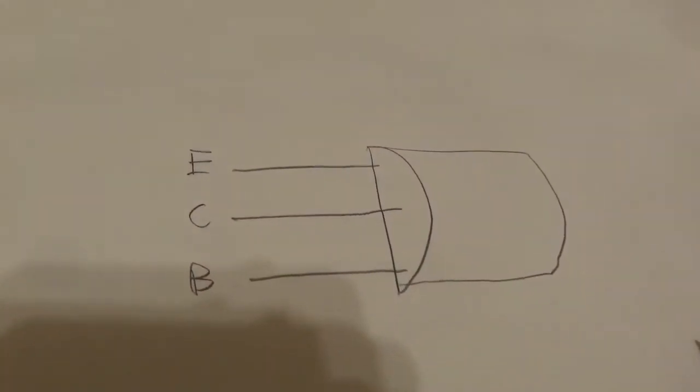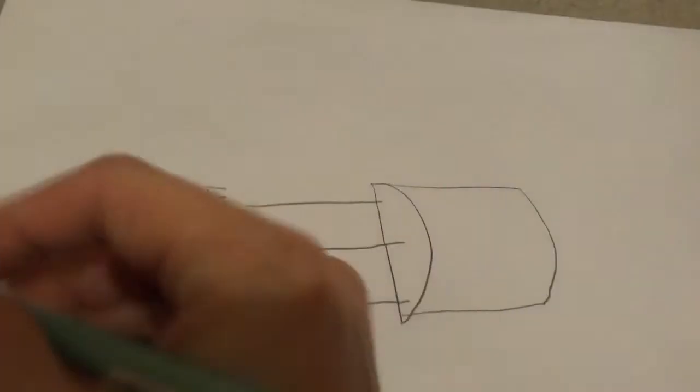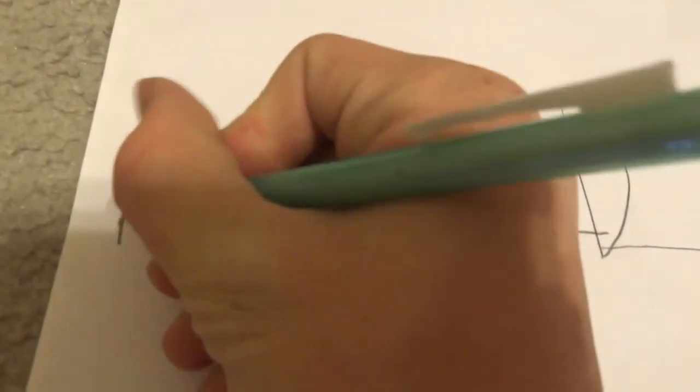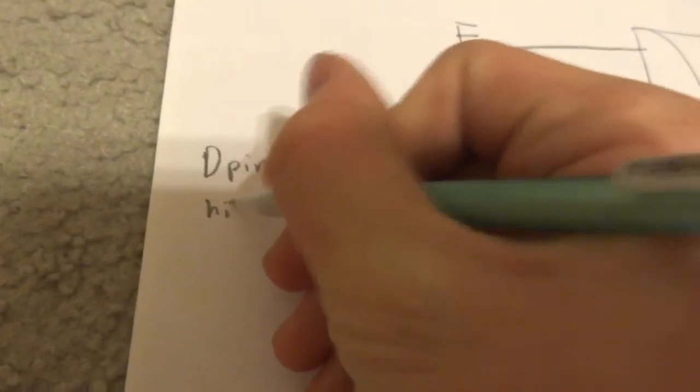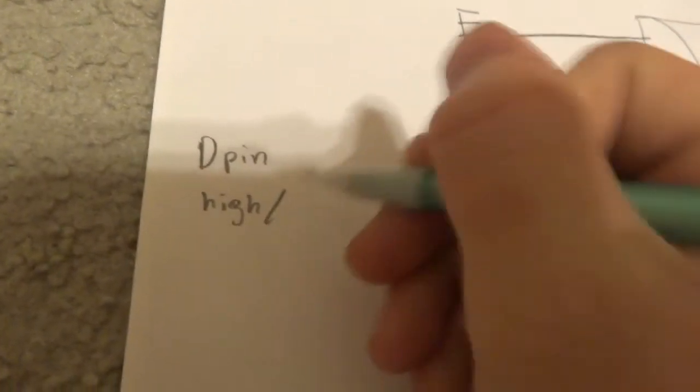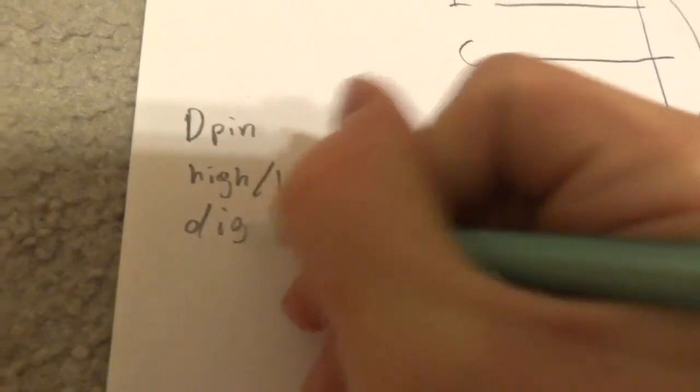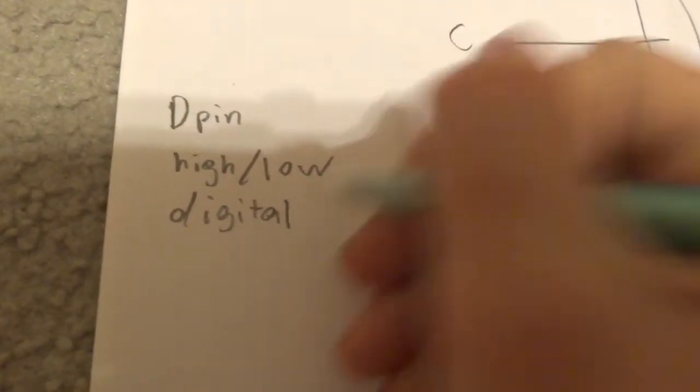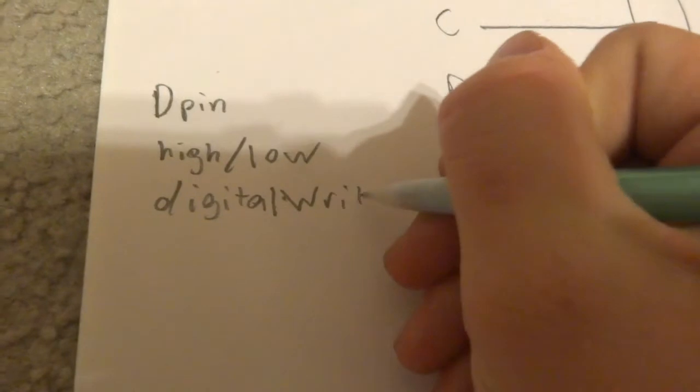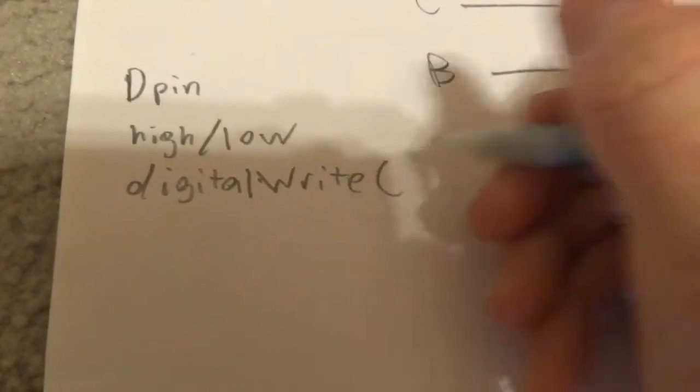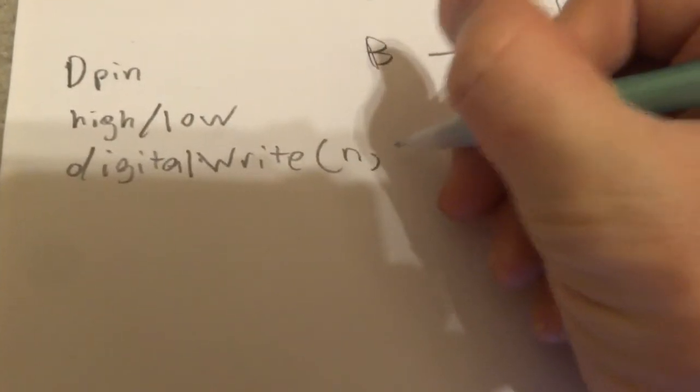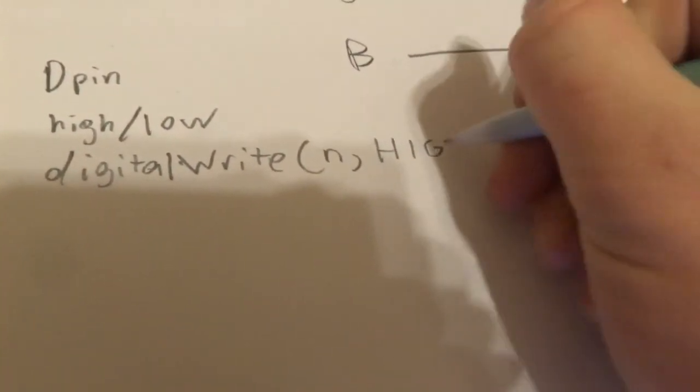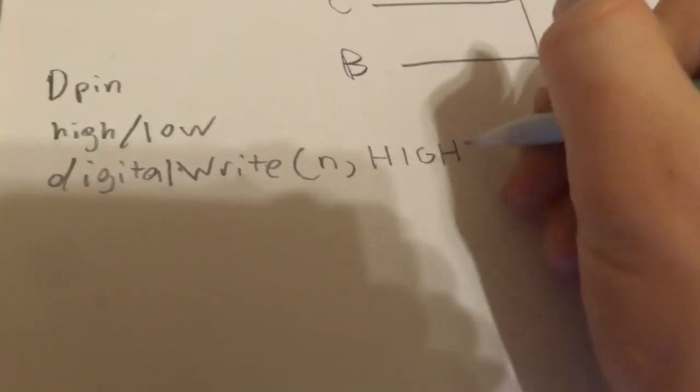So what I'm doing is the data pin is either high or low. This is using digital write and then the pin number and high or low, for example H-I-G-H. And then obviously this is the Arduino code.